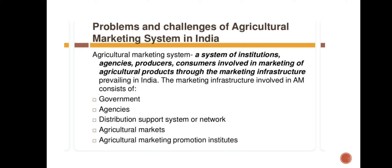Problems and challenges of the agricultural marketing system in India: The agricultural marketing system is a system of institutions, agencies, producers, and consumers involved in marketing of agricultural products through the marketing infrastructure prevailing in India. The marketing infrastructure involved in agricultural marketing consists of government agencies, distribution support system or network, agricultural markets, and agricultural marketing promotion institutes.